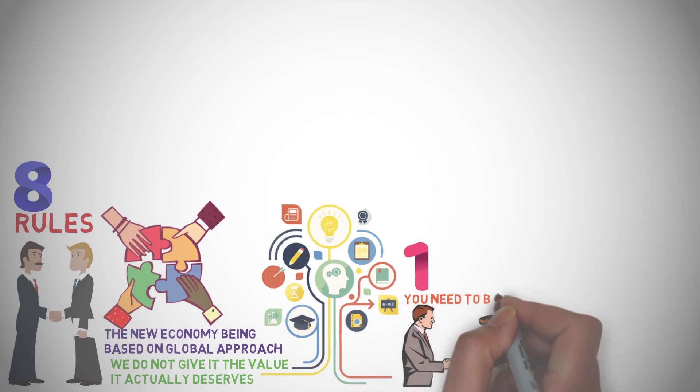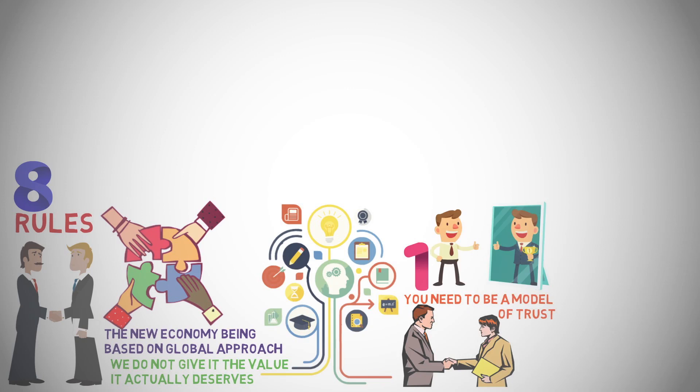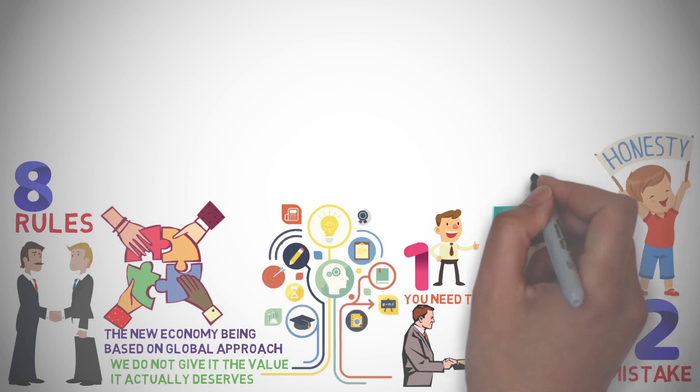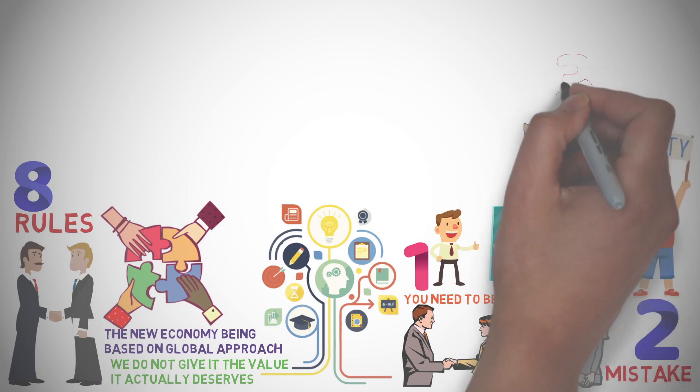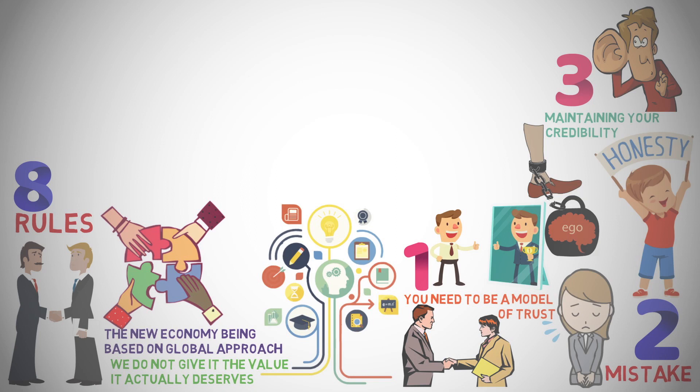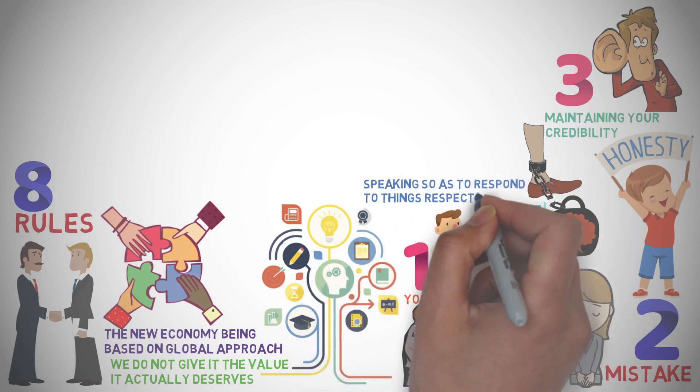1. You need to be a model of trust and hold yourself accountable for whatever you do and instead of the excuses, you need to apologize and try to fix the mistake. 2. You need to be honest and get rid of your ego while maintaining your credibility. 3. Be a good listener and never interrupt the other person while speaking so as to respond to things respectively.